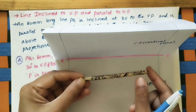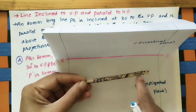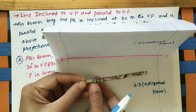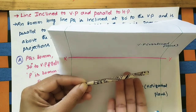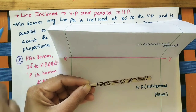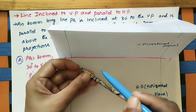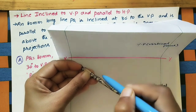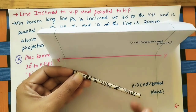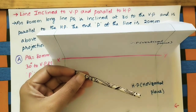Now the line is parallel to VP, and the distance between the line and the vertical plane is constant. The distance between the horizontal plane and this line is also constant — it is parallel to both planes. In our given condition, the line is inclined to VP, making an angle with the vertical plane, and is parallel to the horizontal plane.